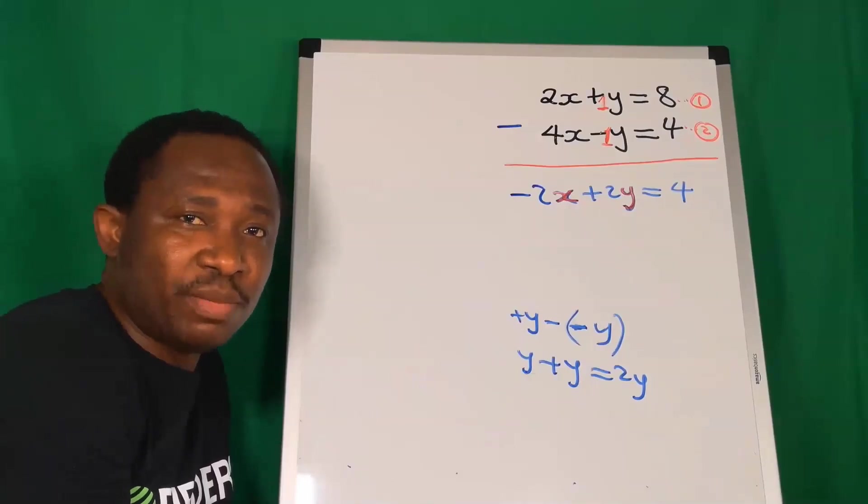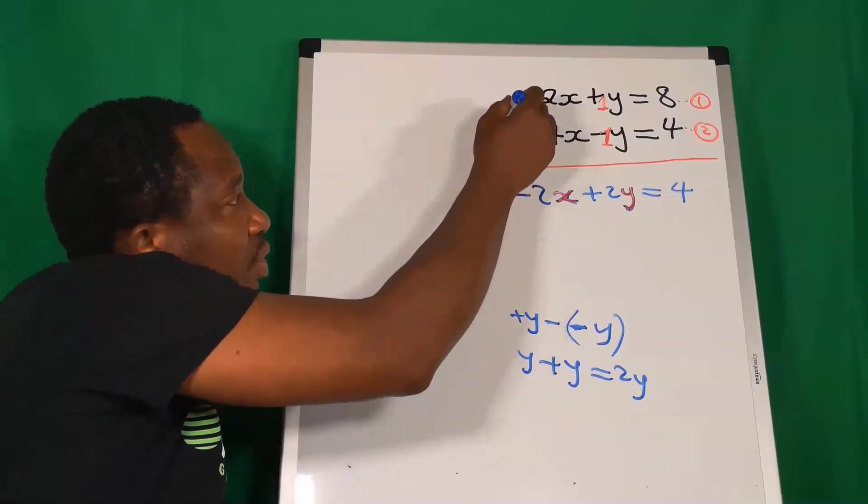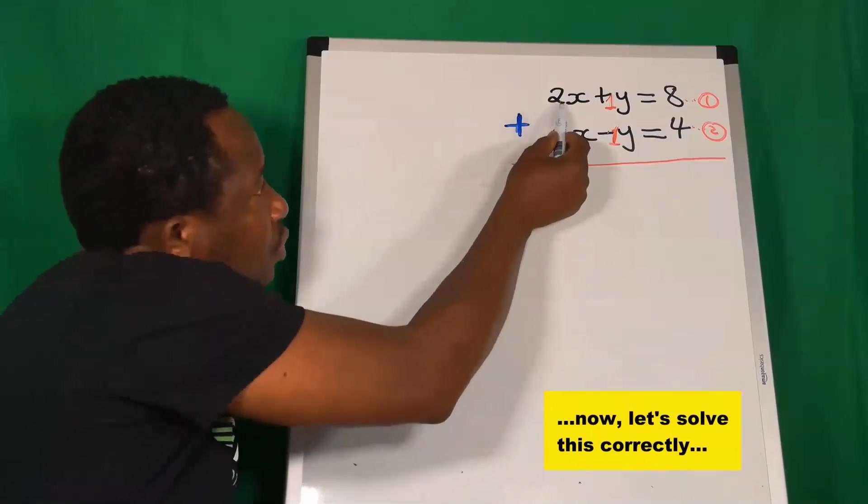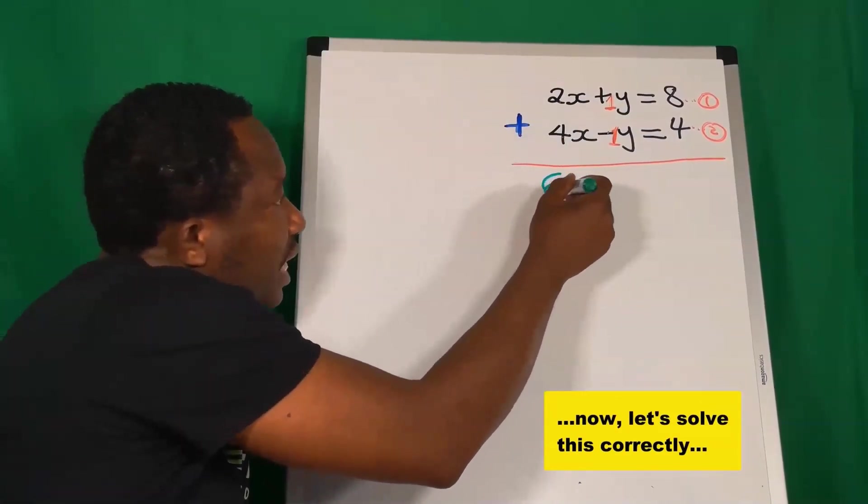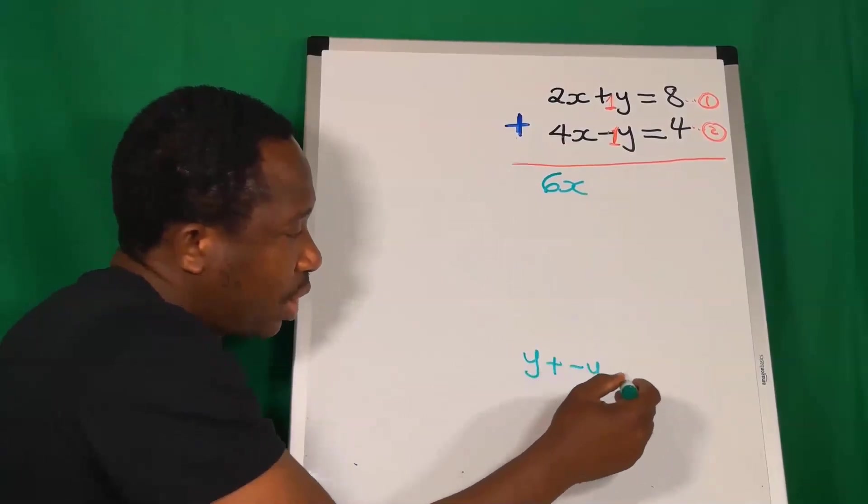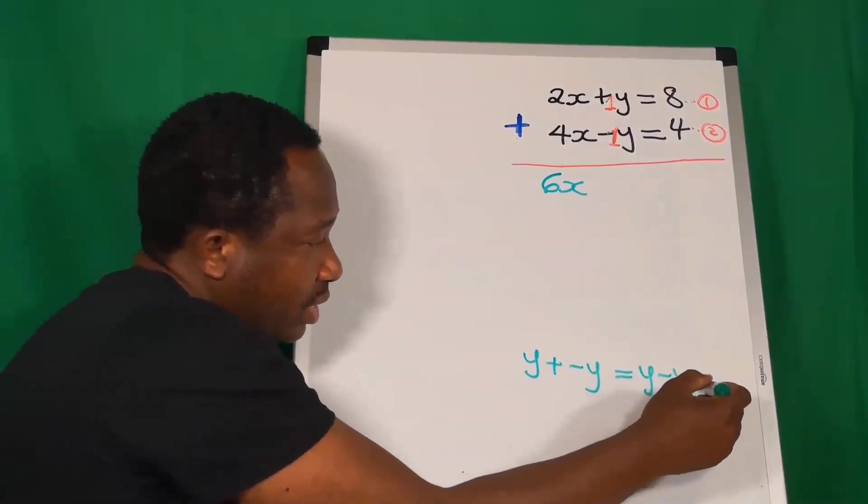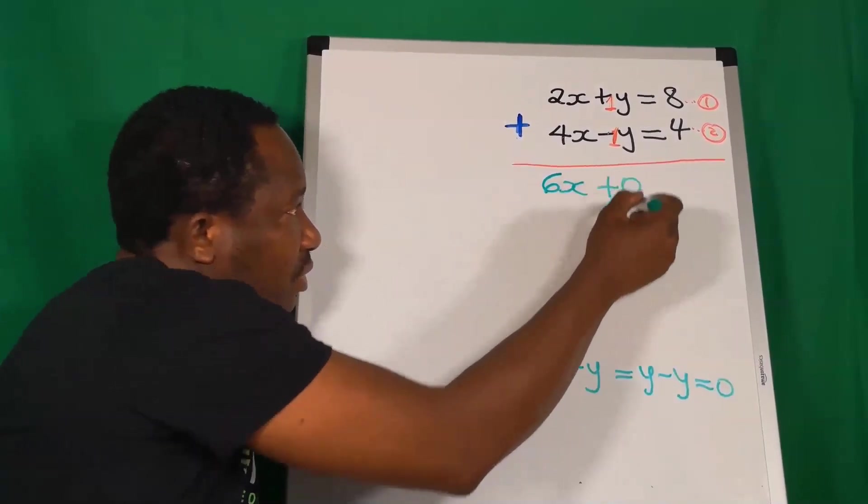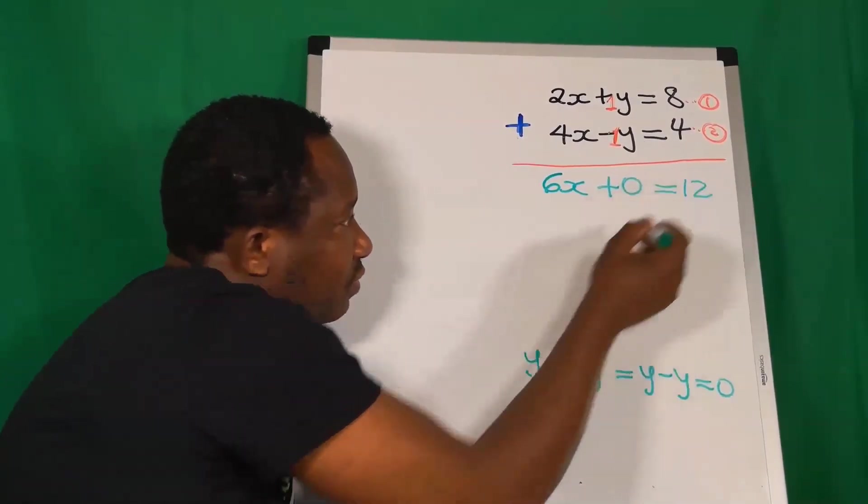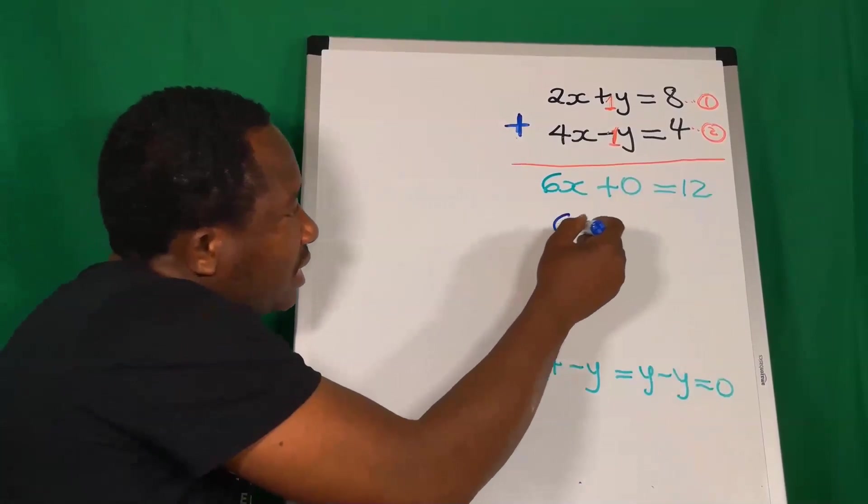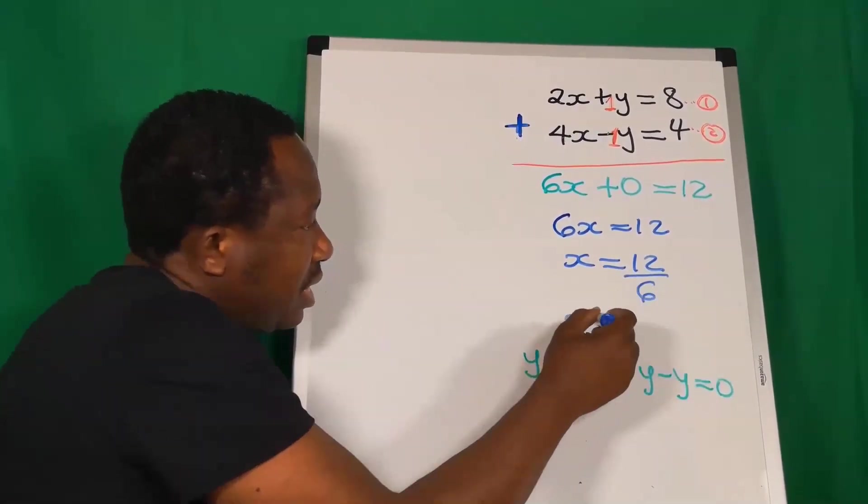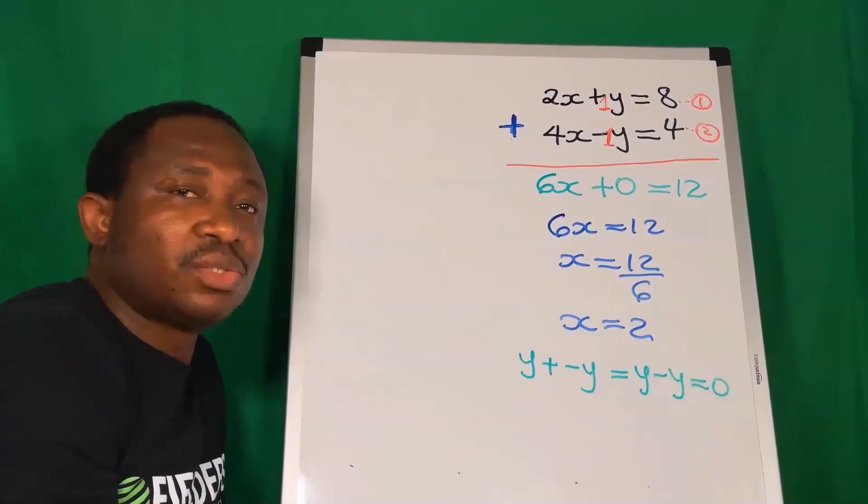Let's solve this correctly. 2 plus 4 will give you 6x. Y plus minus y will give you y minus y, which is 0. On the other side, 8 plus 4 will give you 12. Here we have 6x = 12. X is now 12 divided by 6, and our x is 2. So we have obtained the value for x.